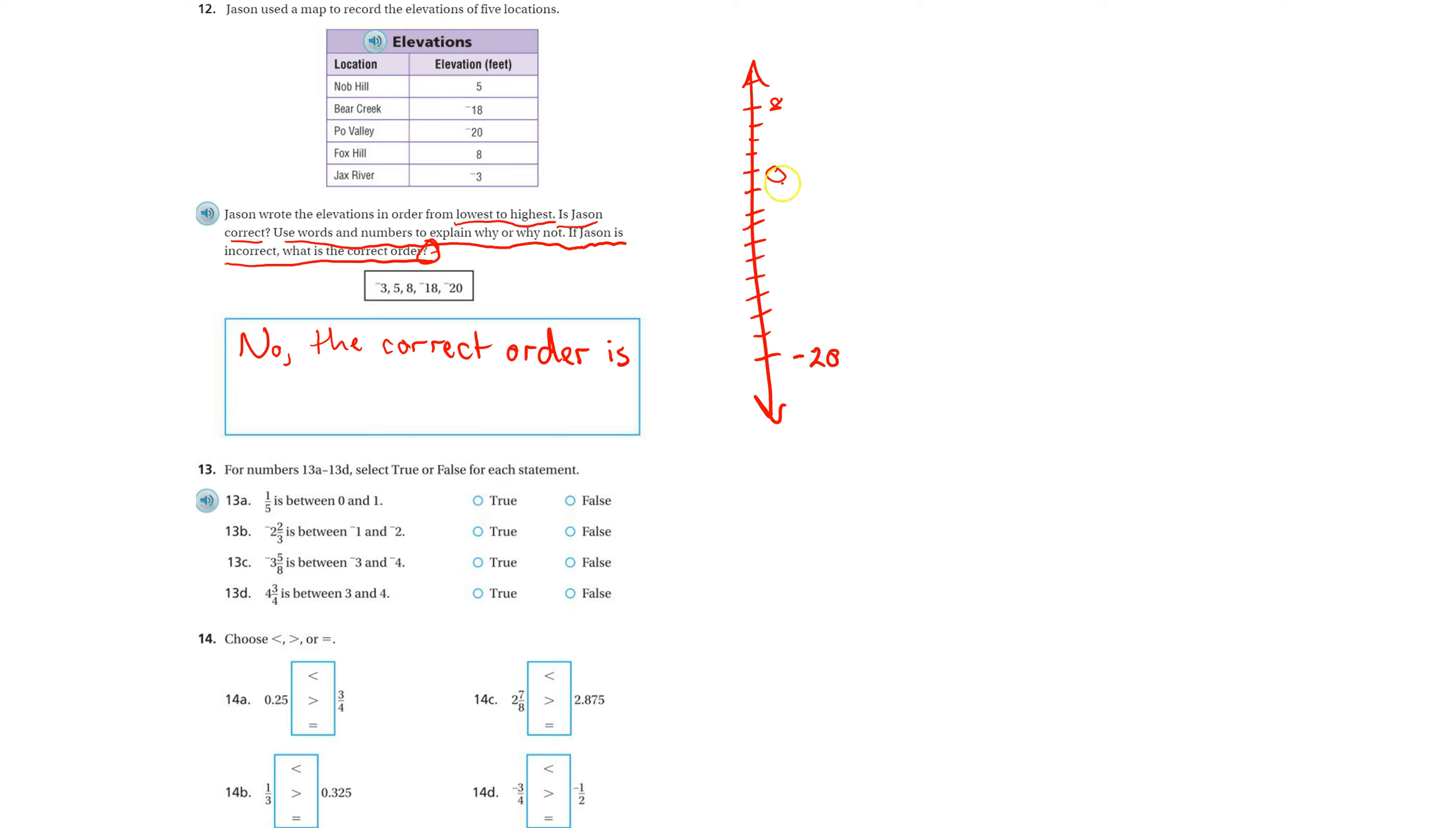I'm just going to graph these. Knob Hill would be two, four, not quite to six, it's going to be right here. Bear Creek is going to be negative 18, right here. Poe Valley is going to be negative 20, right there. Fox Hill, two, four, six, eight, right there. And negative three, negative two, negative four—negative three is right in between. That's Jack's River.